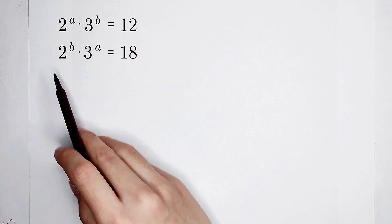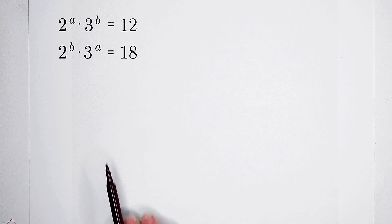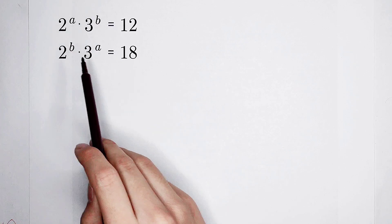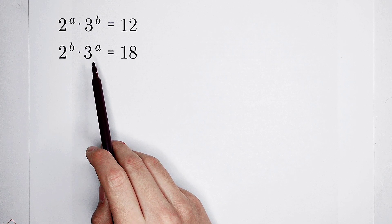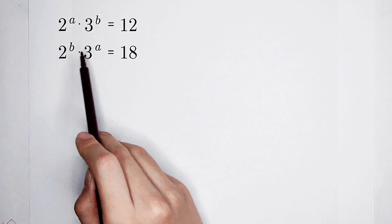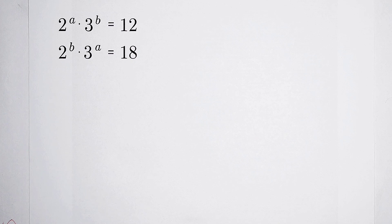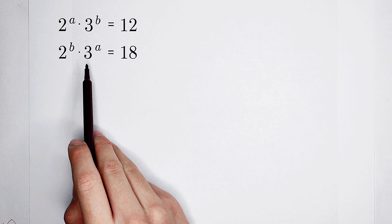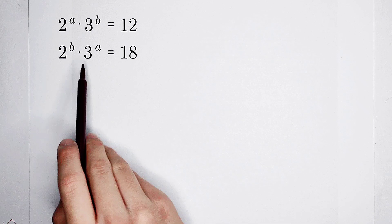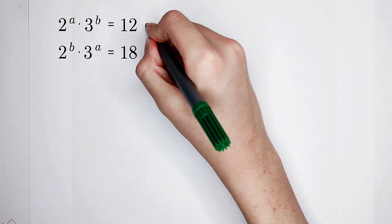How should we solve this problem? They appear as exponents. Our goal is to find a simple relationship between a and b. Which method should we use for the powers? We always expect their multiplications and their divisions. So let's do it.